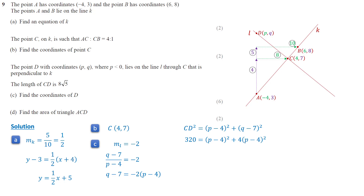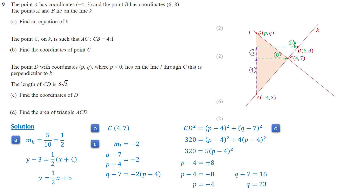Substituting Q minus 7 equals negative 2(P minus 4) into the distance equation gives 320 equals 5 times (P−4)². Dividing both sides by 5 and taking the square root, we get P minus 4 equals plus or minus 8. Since P is less than 0, we take P minus 4 equals negative 8, so P equals negative 4. Since P minus 4 equals negative 8, Q minus 7 equals 16 and Q equals 23. So the coordinates of point D are (−4, 23).